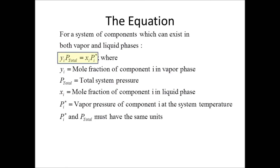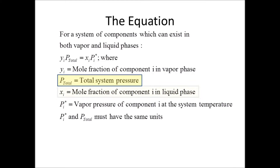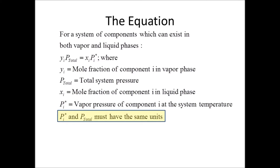Raoult's Law gives us the equation: y_i times the total pressure equals x_i times p-star_i. Here, y_i is the mole fraction of component i in the vapor phase, p_total is the total system pressure, x_i is the mole fraction of component i in the liquid phase, and p-star_i is the vapor pressure of component i at the system temperature. Note that p-star_i and p_total must have the same units of measurement.